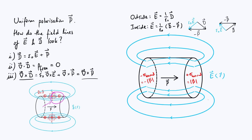Electric field lines start and end on any type of charge — free or bound — and always go from positive to negative. So field lines must emerge from the right face and enter the left face; it wouldn't make sense to have circulating E field lines. Mathematically, the divergence of E is positive on the right side and negative on the left, consistent with Maxwell's equations treating all charges as sources and sinks.